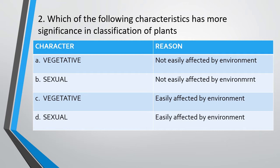Question 2: Which of the following characteristics has more significance in the classification of plants? Option A: Vegetative character — reason given that it is not easily affected by environment. The correct answer is Option B: Sexual character, as it is not easily affected by environment.